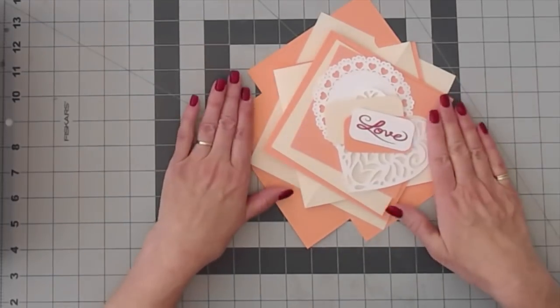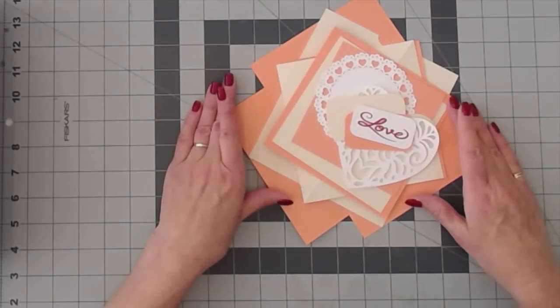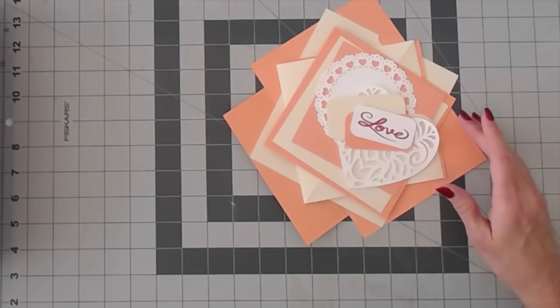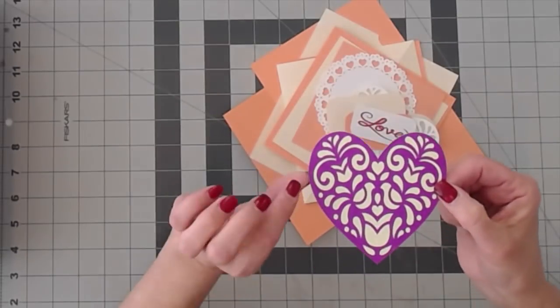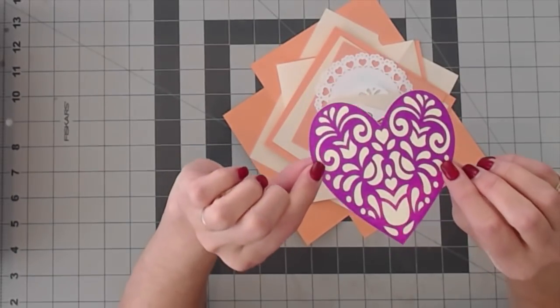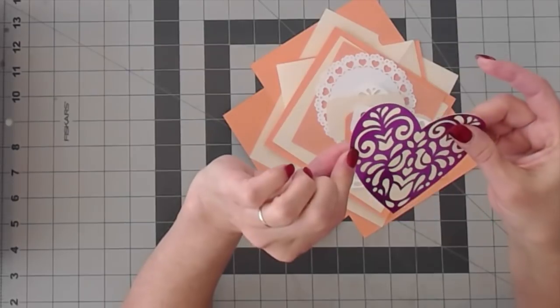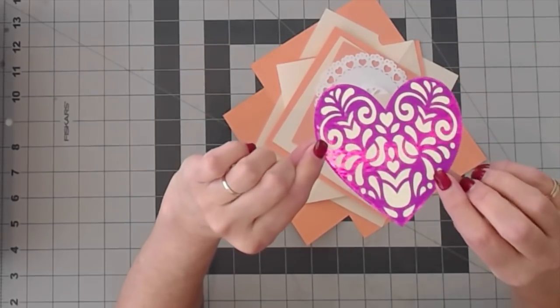We're going to assemble this twisted easel card, but I wanted to show you something first. We get a lot of questions about what can I do with the foil and ease of foil from Cricut. There's so many things you can do.